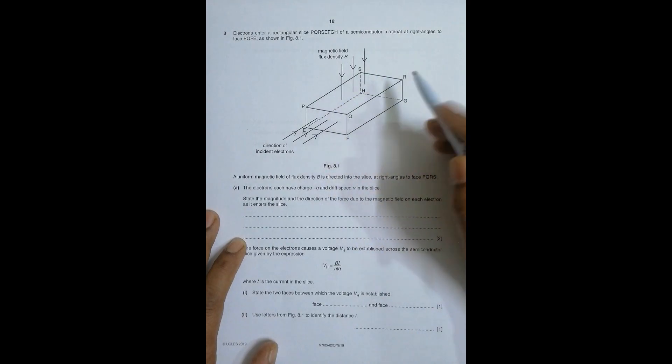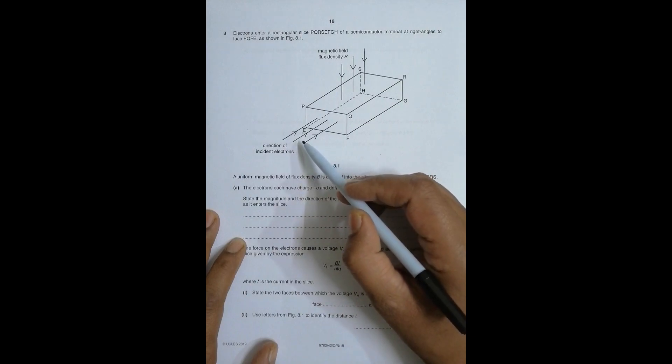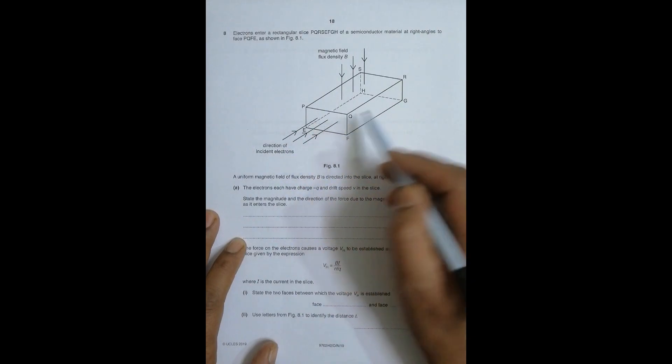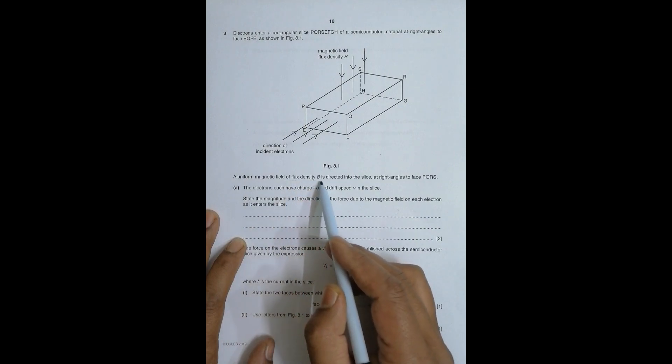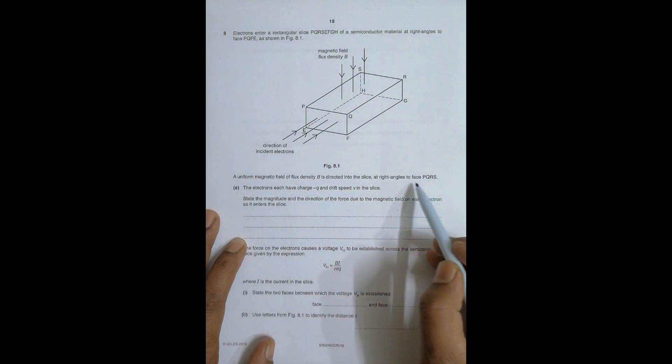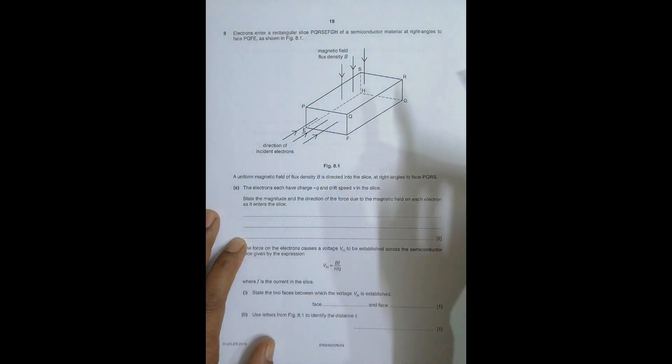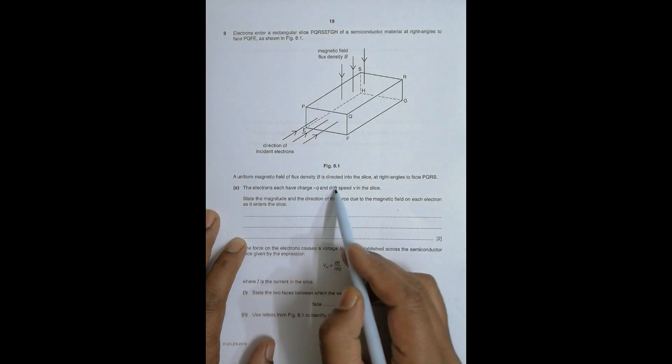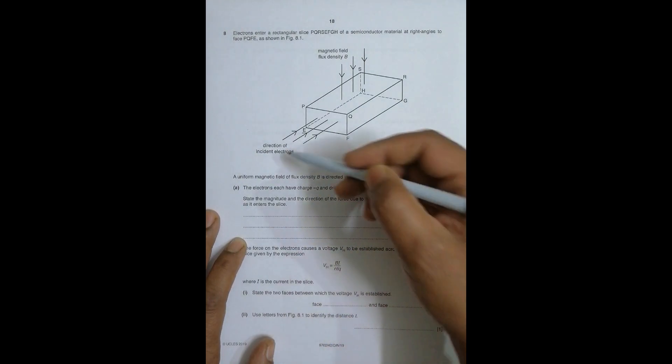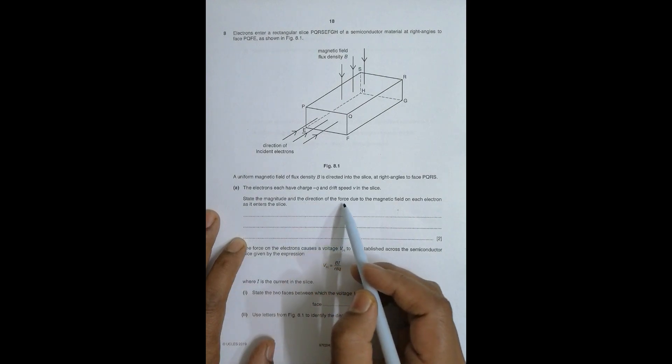A uniform magnetic field of flux density B is directed into the slice at right angles to face PQRS. So if this is horizontal, it is vertical - PQRS here, perpendicular. The electrons each have charge minus Q and drift velocity V in the slice.